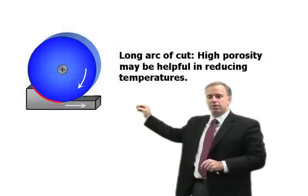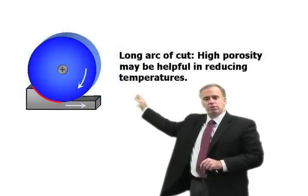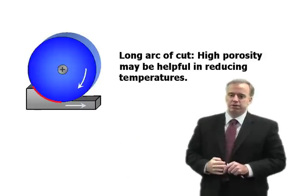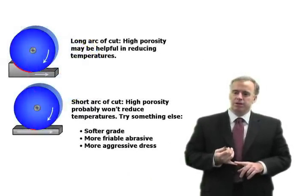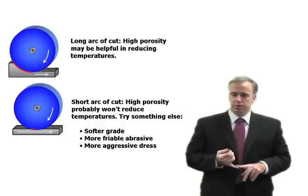It has to do with the length of the arc of cut. Creep feed grinding has a long arc length so we have a lot of area for convection to the coolant. Shallow cut grinding has a short arc length so there's not much potential to remove heat through the coolant.